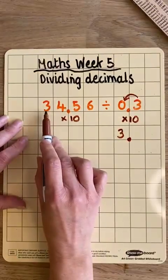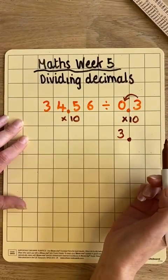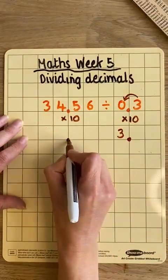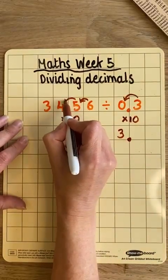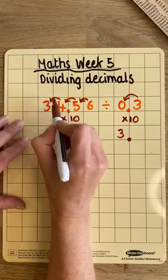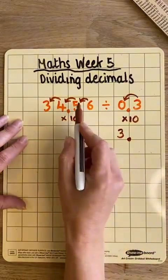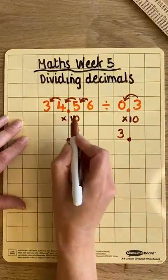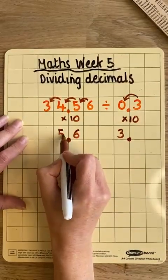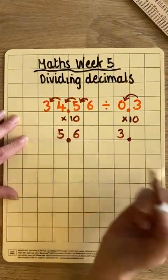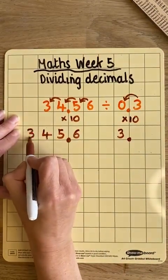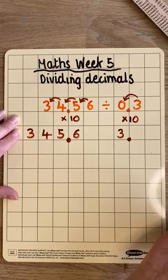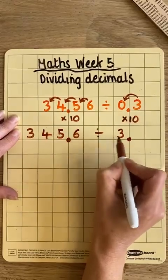On the other side, my 34.56 has also been multiplied by 10. If I put my decimal point in the same place, we can see that each of these digits has moved one column to the left as well. So my 6 is now in the tenths column. My 5 is in the units or ones column. The 4 is in the tens column. And the 3 is in the hundreds column. My new number is 345.6, and I'm dividing that by 3.